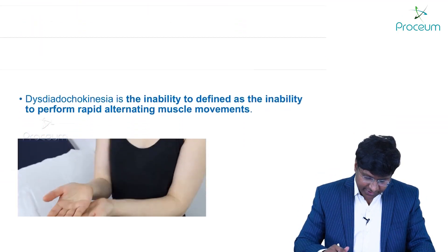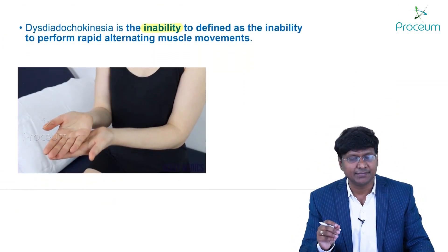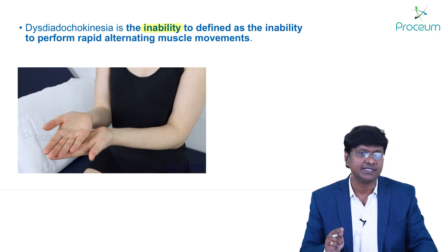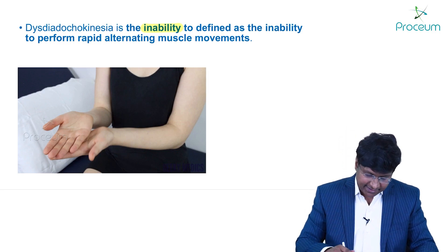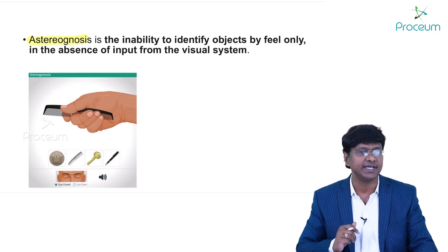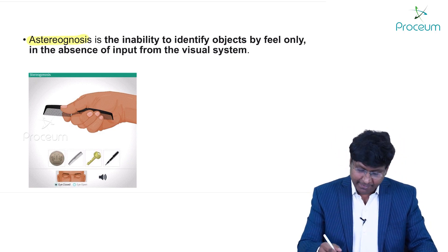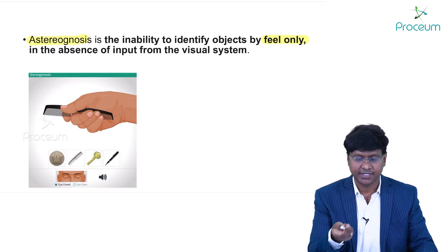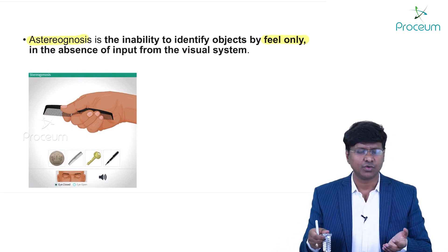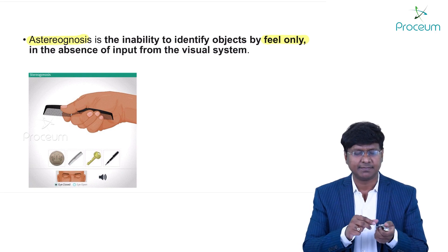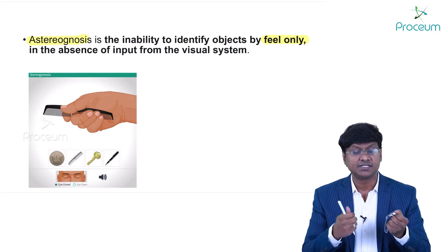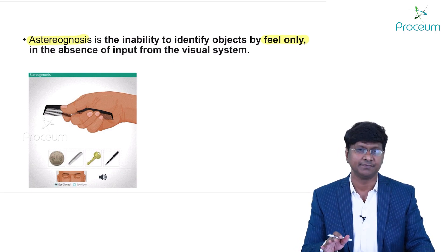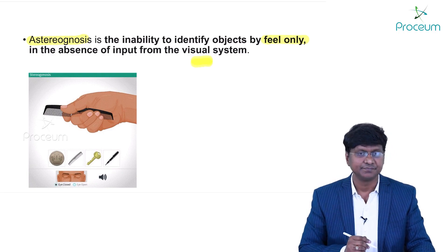Dysdiadochokinesia is the inability to perform rapid alternating muscle movements and is a feature of cerebellar lesions. Astereognosis is the inability to identify an object by feel alone in the absence of visual input. For example, if an object is placed in your hand with closed eyes and you cannot identify it, that is astereognosis.